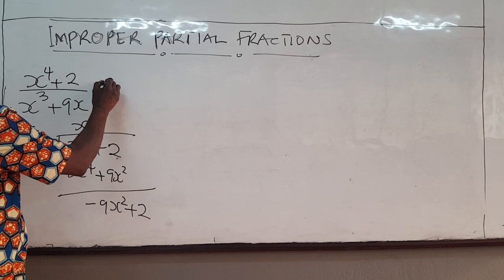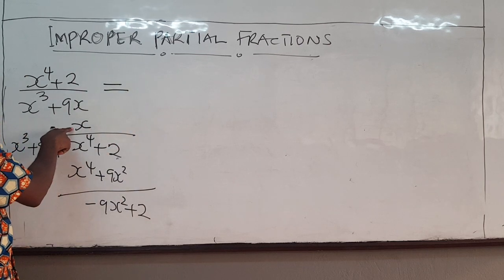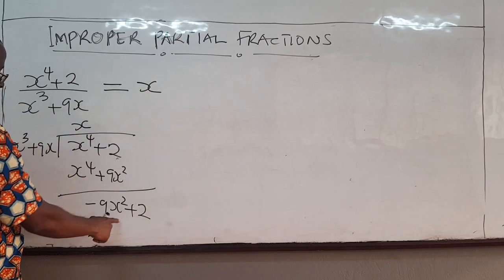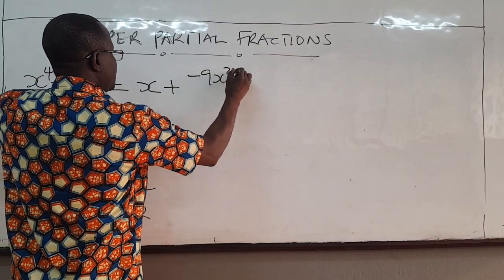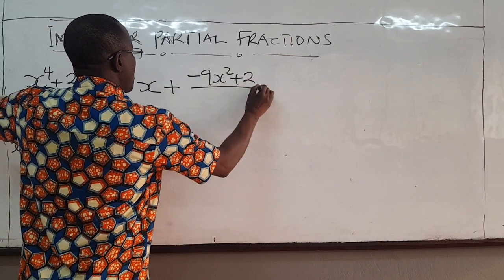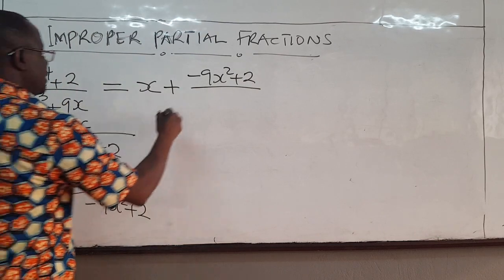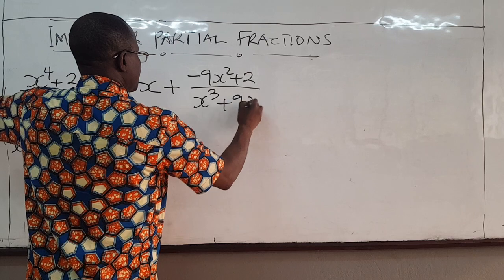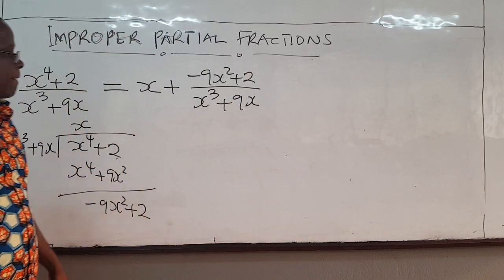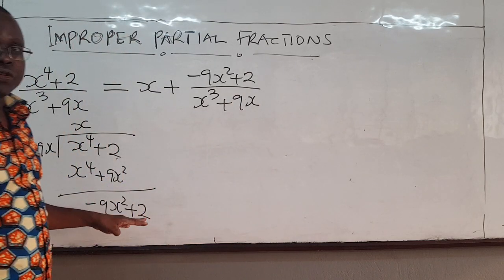Which means that this can be written as x. The remainder is this, so plus negative 9x squared plus 2 all over our denominator x cubed plus 9x. So that is what we do first.